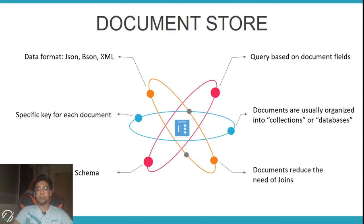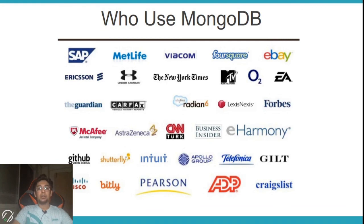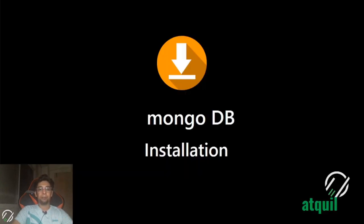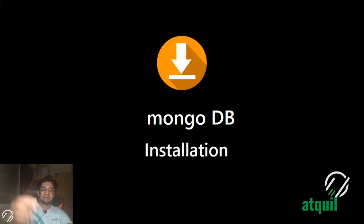Documents are organized in collections, and there is no need for join operations as we already covered. Many major companies are using MongoDB because it is easily accessible — you can have all the information about an employee in a single file and it is easy to access. Please go to my second tutorial where we will install MongoDB on your local system. Thanks — please like, share, subscribe, and press the bell icon to get notifications.